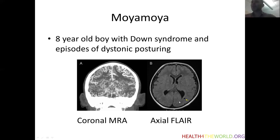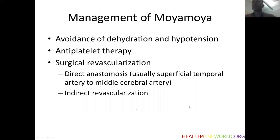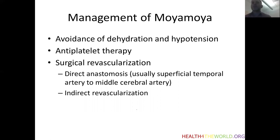These collaterals are the reason for transient ischemic symptoms, especially with hyperventilation, hypotension, or settings of increased metabolic demands such as illness. Often in these children you'll see evidence of periventricular watershed white matter disease or chronic ischemic infarction. The mainstay of treatment is avoidance of dehydration and low blood pressure. Children with Moyamoya are often spontaneously a bit hypertensive, and it's important to recognize that and not treat it, because they may be dependent on the slightly higher blood pressure for cerebral perfusion. Antiplatelet therapy is often useful to maintain blood flow through the small collaterals; we often use aspirin 3 to 5 milligrams per kilogram per day.